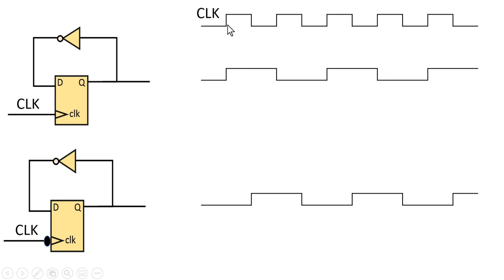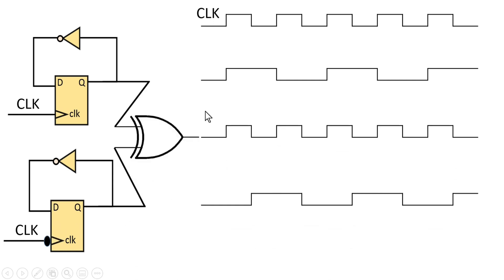The first clock divider toggles its output at every positive edge of the clock. The second clock divider triggers at the negative edge of the clock. If you put an XOR gate at the output of both dividers, you will get the required signal, which is just similar to the clock signal.